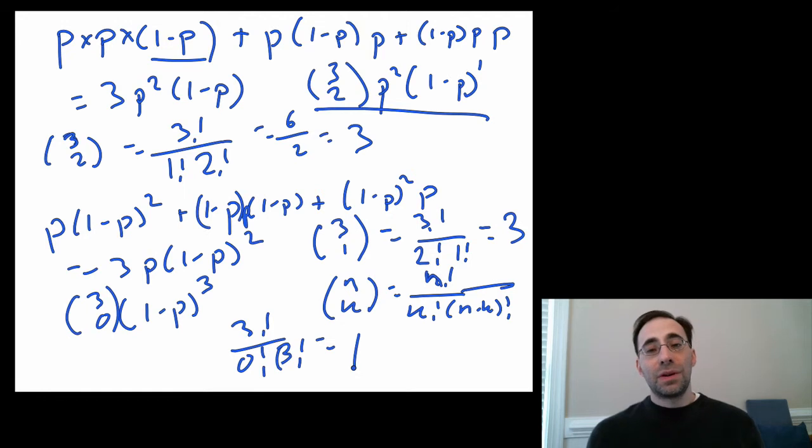Basically, the combinatorics allow you to deal with multiple possibilities of drawing things and takes into account the fact that the order doesn't matter here. You're just adding up all the possible ways of getting something. And the combinations do that for you.